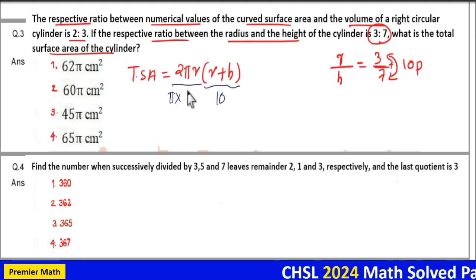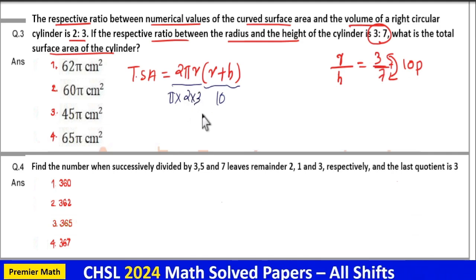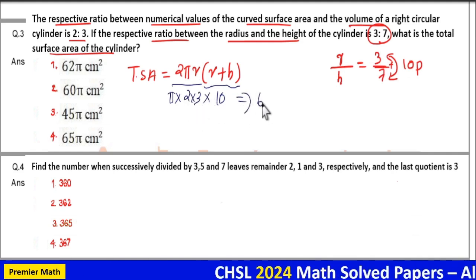Here r equals 3 parts. So, 2 times r equals 2 times 3, that is 6. So, 6 times 10 equals 60π.